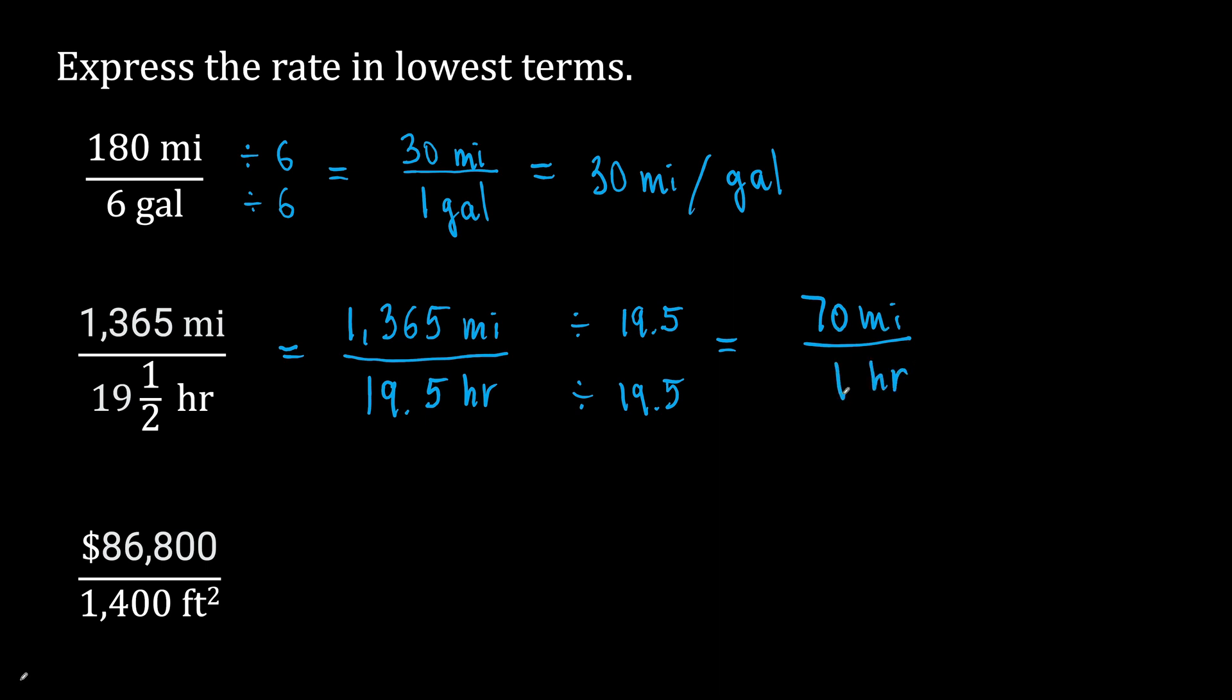So we have 70 miles to 1 hour, which we can also write as 70 miles per hour.